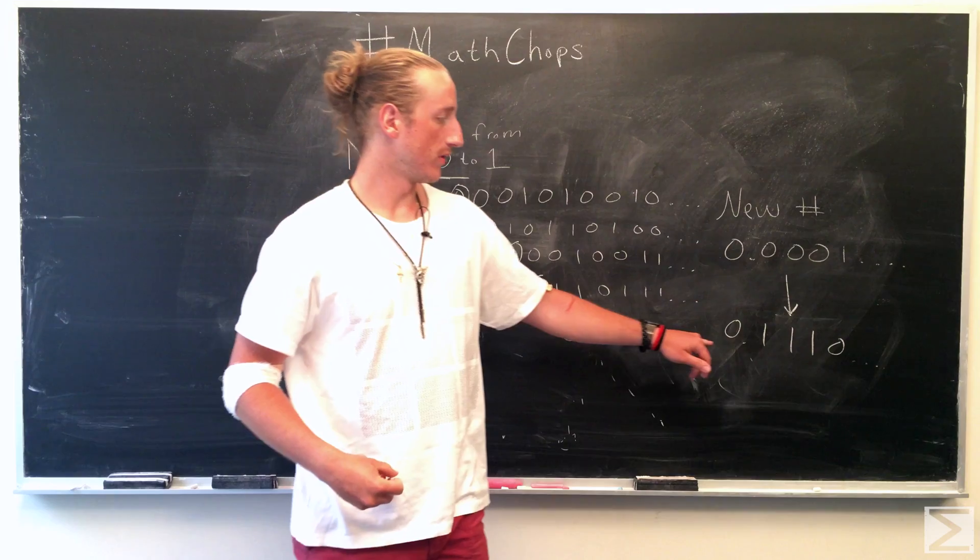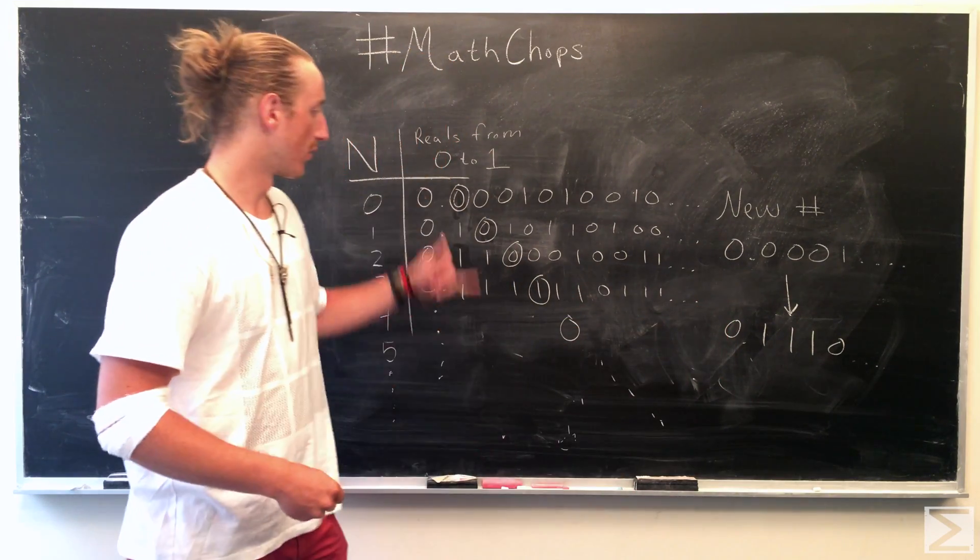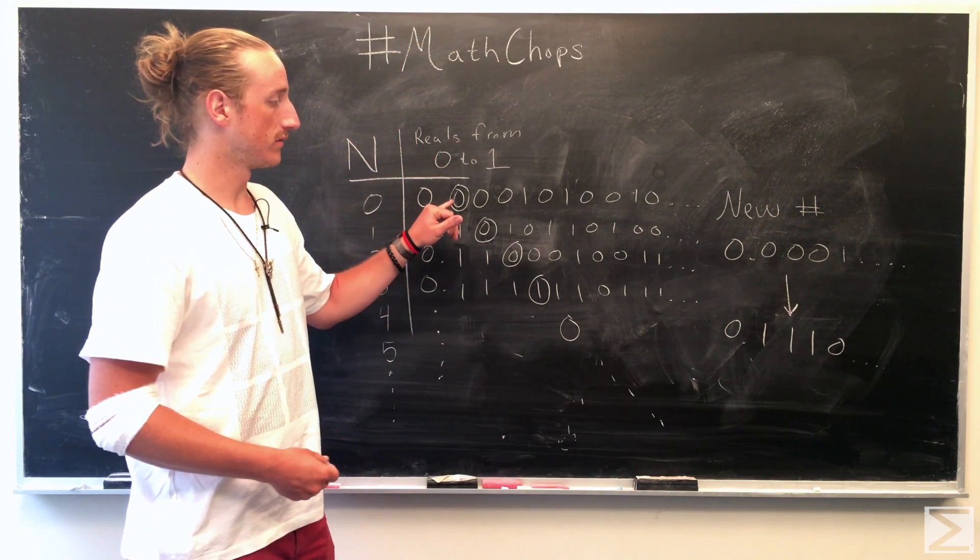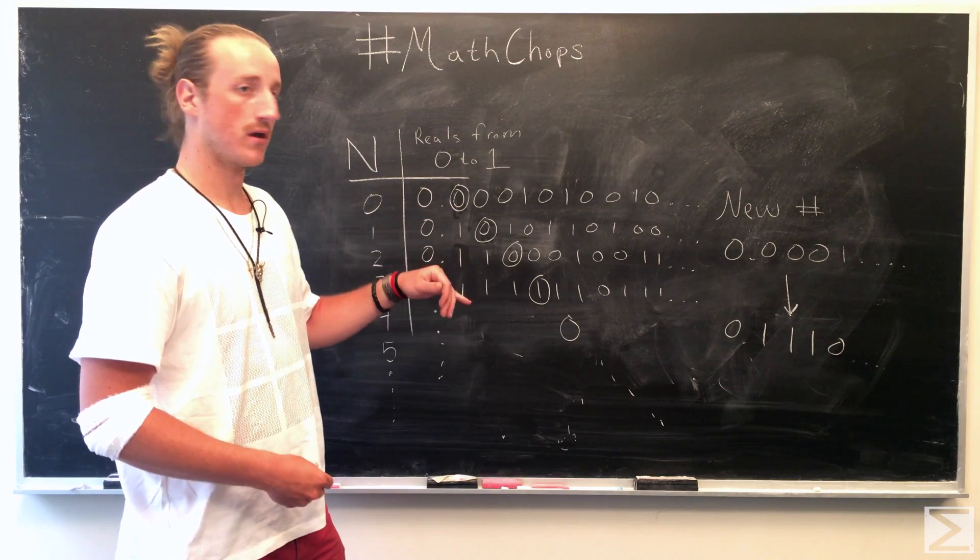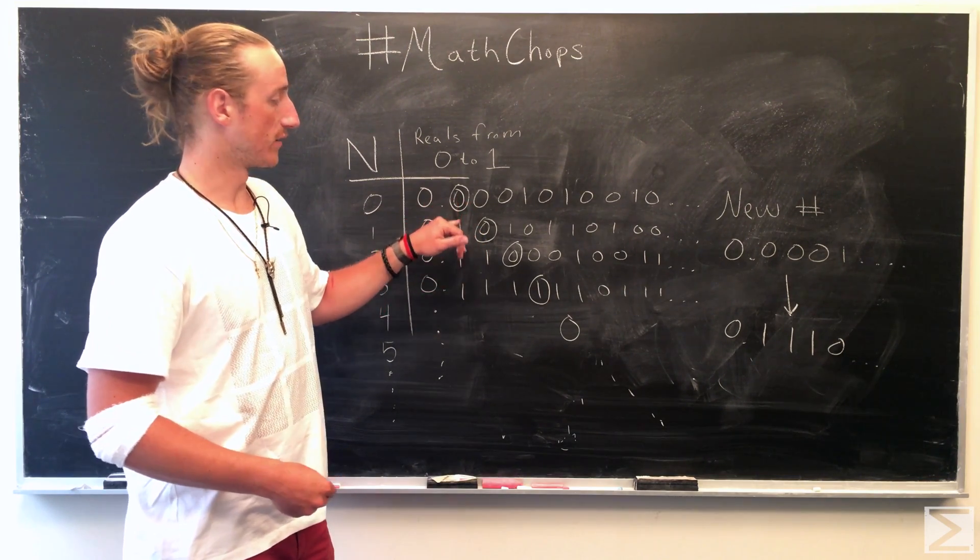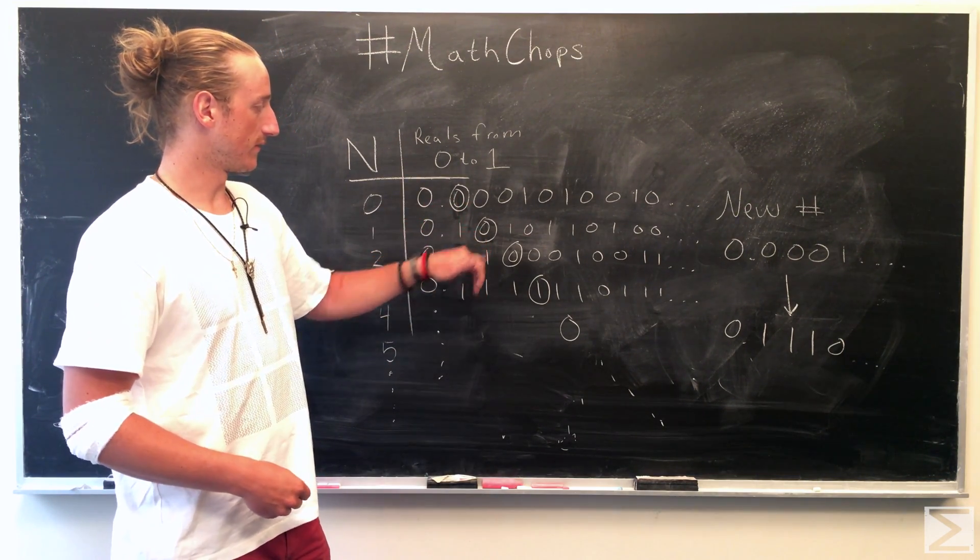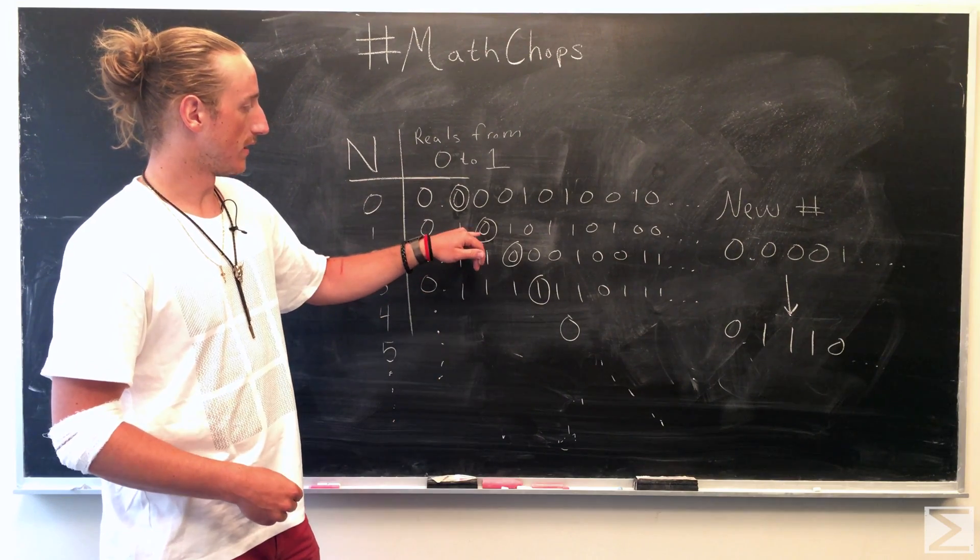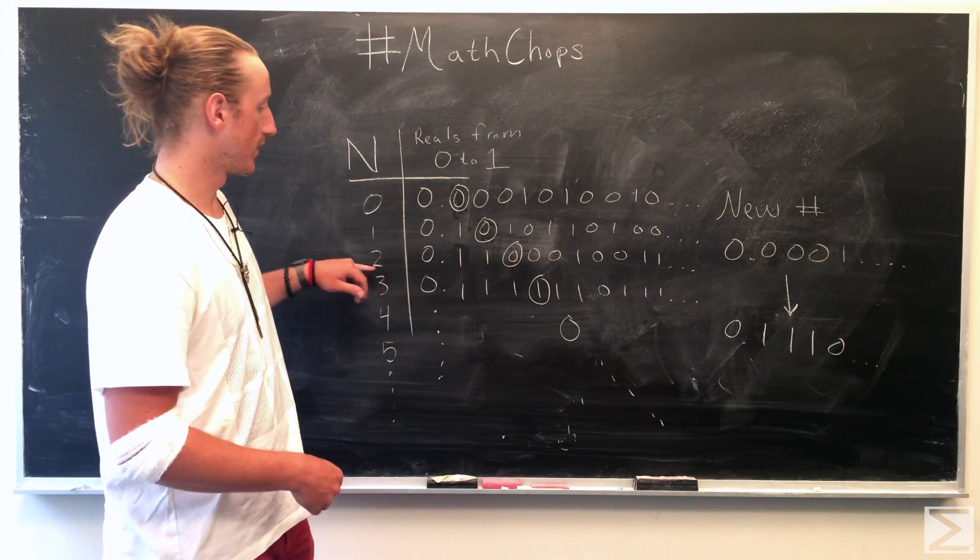And then this number will be a number that is nowhere to be found on this list because in the first number, the first value is different. In the second number, the second decimal is different. In the third number here, the third place value is different and so on and so forth.